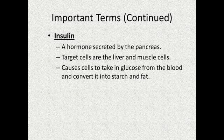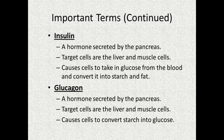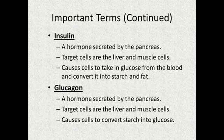Another hormone secreted by the pancreas, not as well known as insulin but just as important, is glucagon. Glucagon has the opposite effect of insulin — it causes cells to break down their starch into glucose monomers and release those into the blood. So insulin takes sugar out of the blood and converts it into starch, while glucagon causes starch to be converted into glucose, which then goes into the bloodstream.